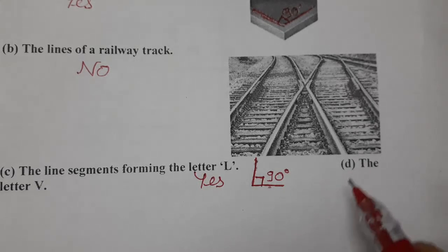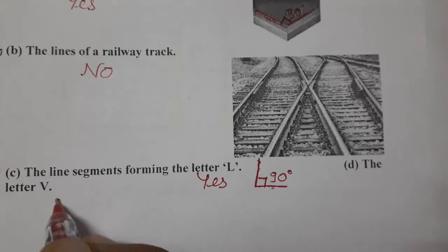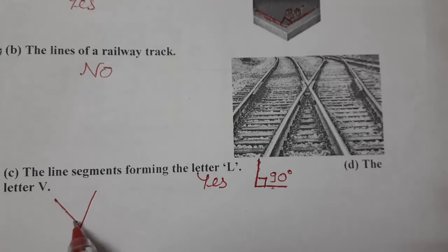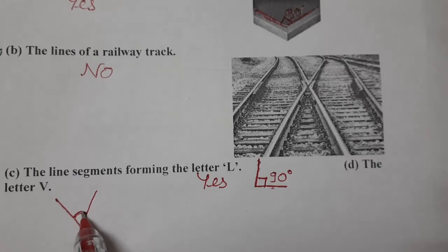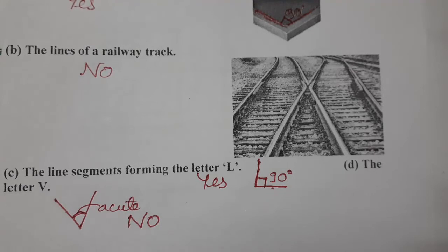And the D one, the letter V. So D one, V. See V. They are not perpendicular. This is acute angle only. This is acute angle. So no, for C one it is no, because they are not making an angle of 90 degrees.